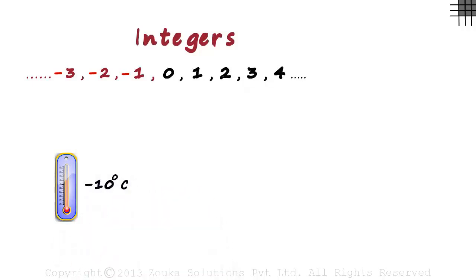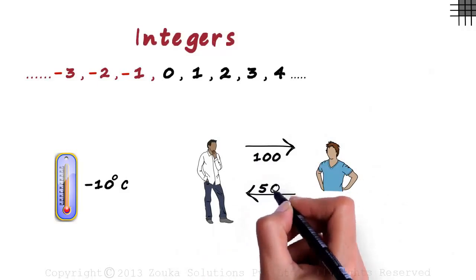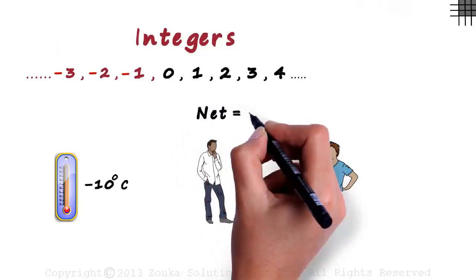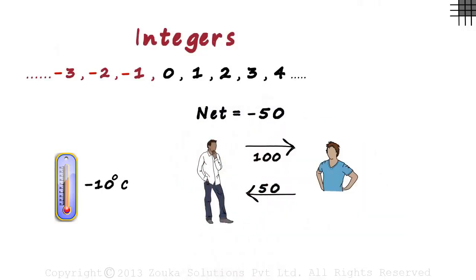Let us see a different example. Suppose you gave your friend hundred rupees and that friend returned just fifty rupees. What is the net amount you have now? The net amount you have is minus fifty rupees. We know there is no note available in the market which amounts to minus fifty rupees.